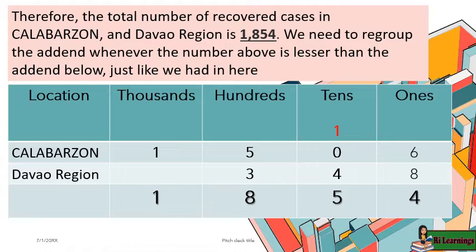We need to regroup the addend whenever the number above is lesser than the addend below, just like we had in this example.